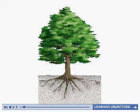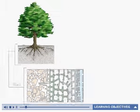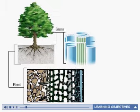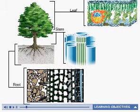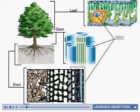Xylem also makes up the woody, supporting tissue of trees, and one reason that trees can attain great heights is the vast amount of xylem they produce. Roots, stems, and leaves all contain xylem and play specific roles in the movement of water through the plant.